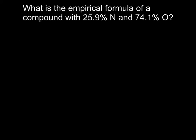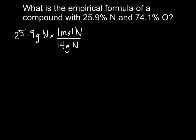Here is another example. What is the empirical formula of a compound with 25.9% nitrogen and 74.1% oxygen? Assuming 100 grams, our percentages become our mass. For nitrogen, I start with 25.9 grams and divide by the atomic mass of nitrogen, which is 14 grams. 25.9 divided by 14 gives me 1.85 moles of nitrogen.